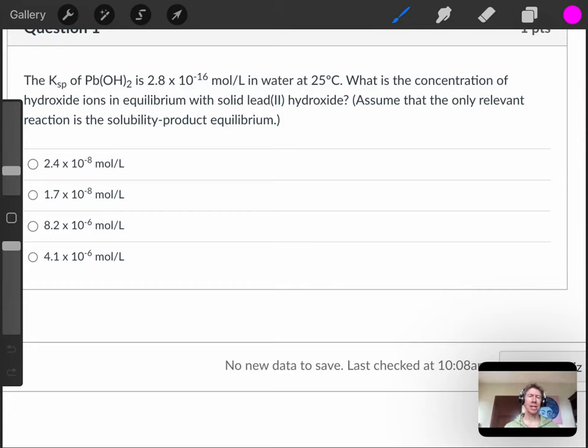It says that for lead(II) hydroxide, the value is 2.8 times 10 to the minus 16 moles per liter. I don't think those units make sense, so I apologize for that.